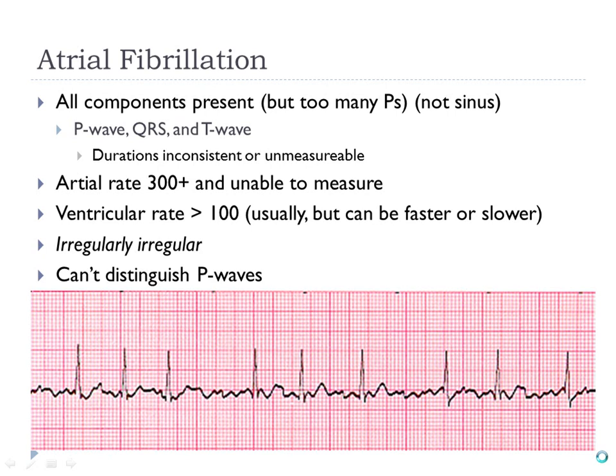A student asks: how do you count the atrial rate? You can't count it, because you really can't identify anything. There are lots of P waves in there, but they're indistinguishable. I'm never going to ask you to count the atrial rate.